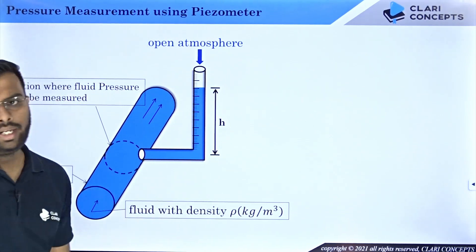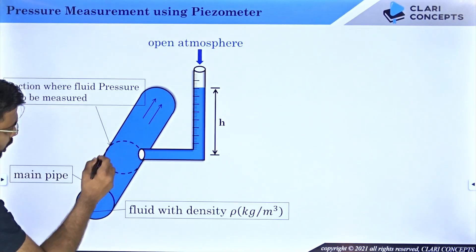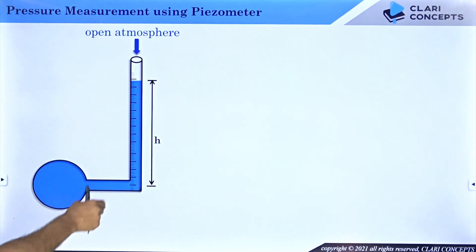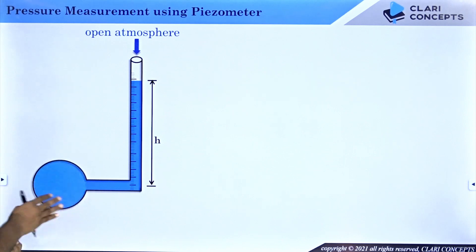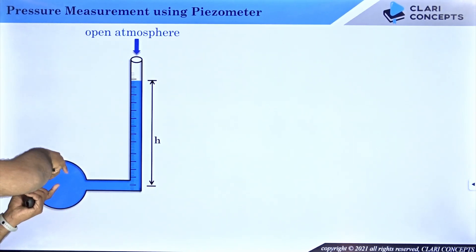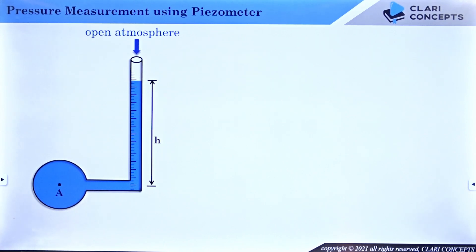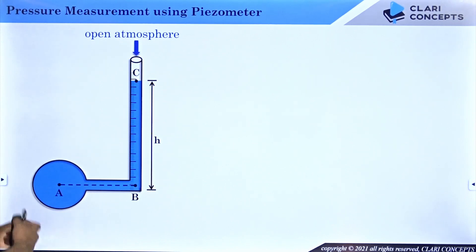When you look at this particular arrangement from the side view, you will see a circular cross-section of the pipe and then the piezometer tube. Here you have the fluid column filled to h meters in the piezometer tube, and this circle is the circular main pipe section — it is perpendicular to the board. The piezometer tube is mounted at this section. Let us suppose point A is the center of the pipe, where we need to find the pressure of the fluid. I will also mark point B at the base corner and point C at the free surface of the fluid in the piezometer tube.